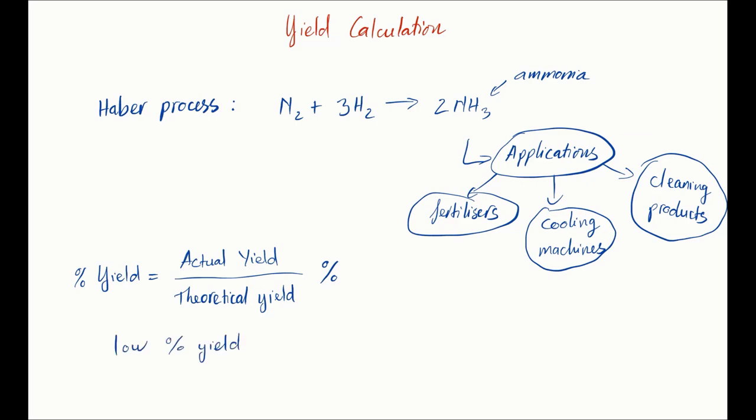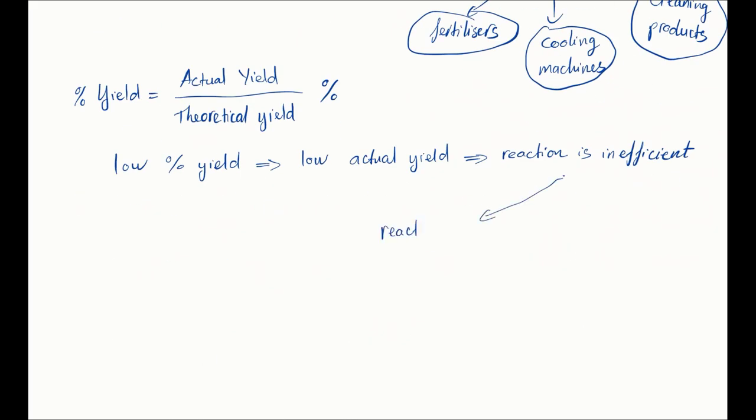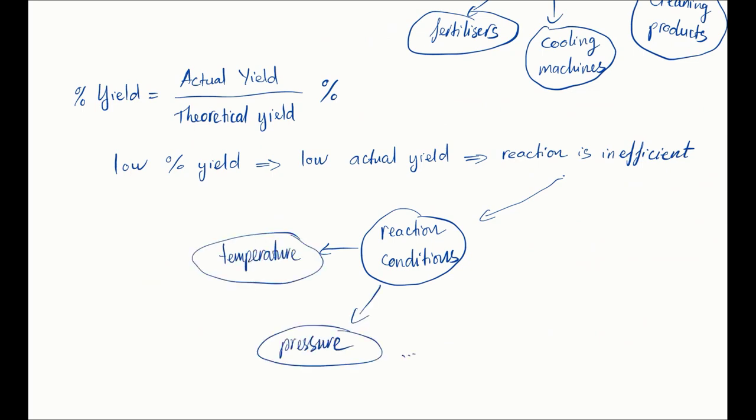It tells you how your reaction went, whether your synthesis is efficient, whether you got the right temperature or pressure, or if the reaction design has too many side reactions. So the further your actual yield is from the theoretical yield, the smaller the percentage yield, and that means the less efficient your reaction was.